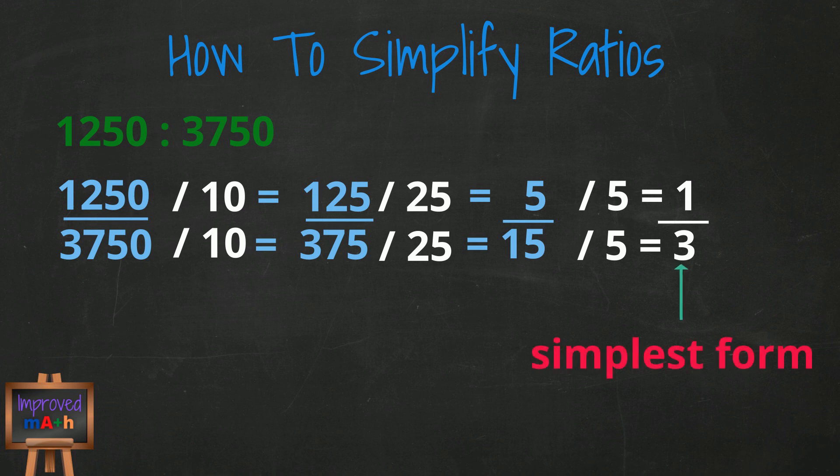You can use this method when numbers are really large. As long as you're dividing both numbers by the same amount, you can repeat this process until the numbers get down small enough to where you can use normal factors to figure it out.